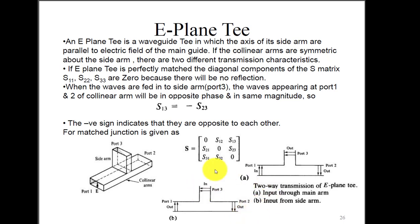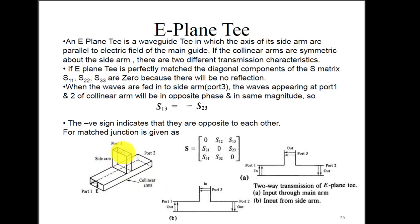To analyze the E-plane T-junction characteristics, we derive the S-matrix. With 3 ports, the S-matrix is 3×3, containing coefficients S11 through S33. If all three ports are perfectly matched to the junction, there are no reflections, so the diagonal coefficients S11, S22, S33 are zero. Since the incident power at port 3 divides equally between ports 1 and 2 with a 180-degree phase shift, S13 equals minus S23, where the negative sign indicates the opposite phase.